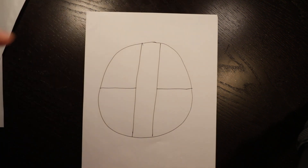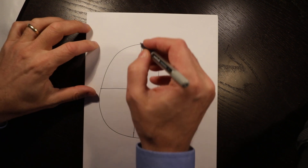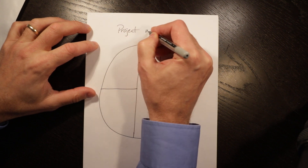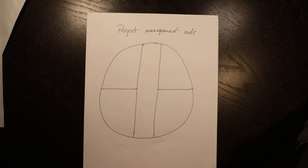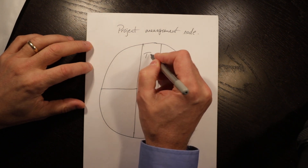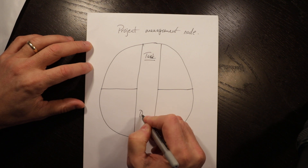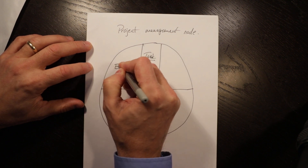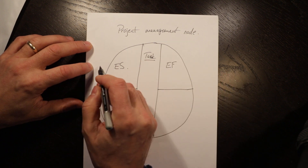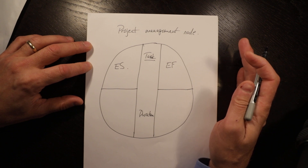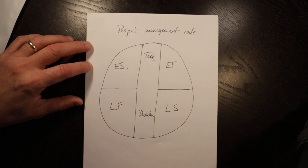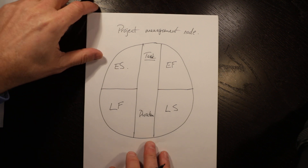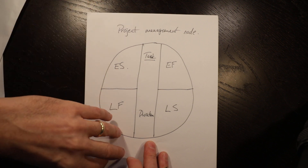Just a quick review: we'll use the activity-on-node approach. This is a project management node — you'll sometimes see these as squares or other shapes, and the specific shape doesn't matter that much. What matters is you have a task or activity name, duration, earliest start, and earliest finish. We do the pass from left to right for earliest start and earliest finish, then latest start and latest finish. That's how we fill out those nodes. Now let's look at a simple project.